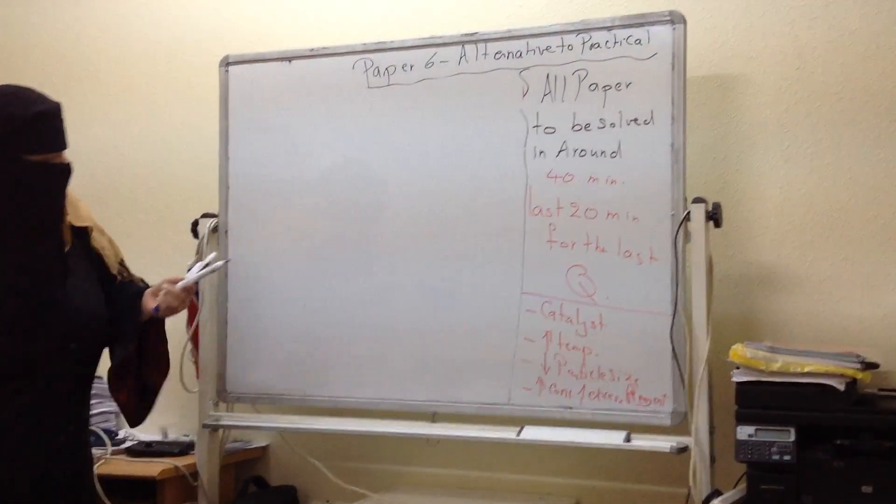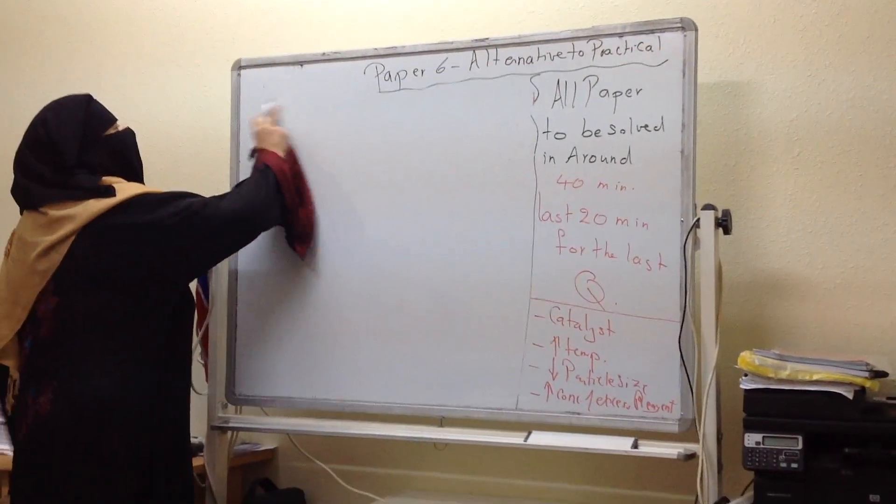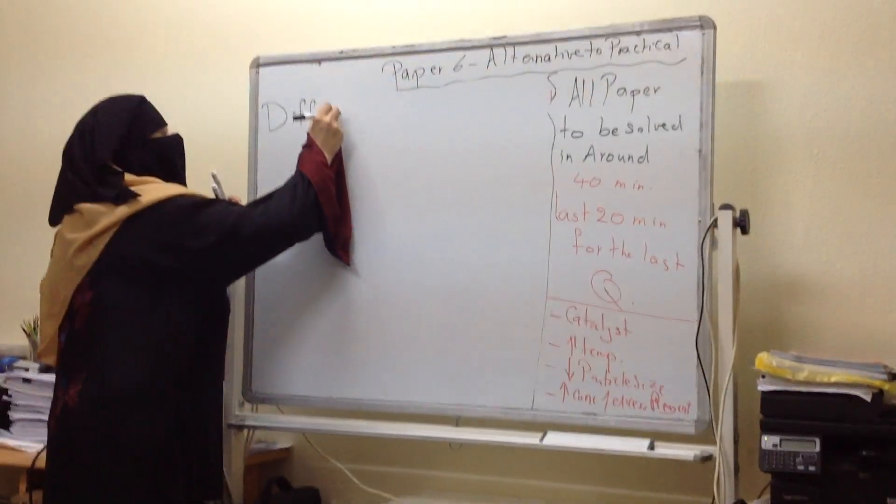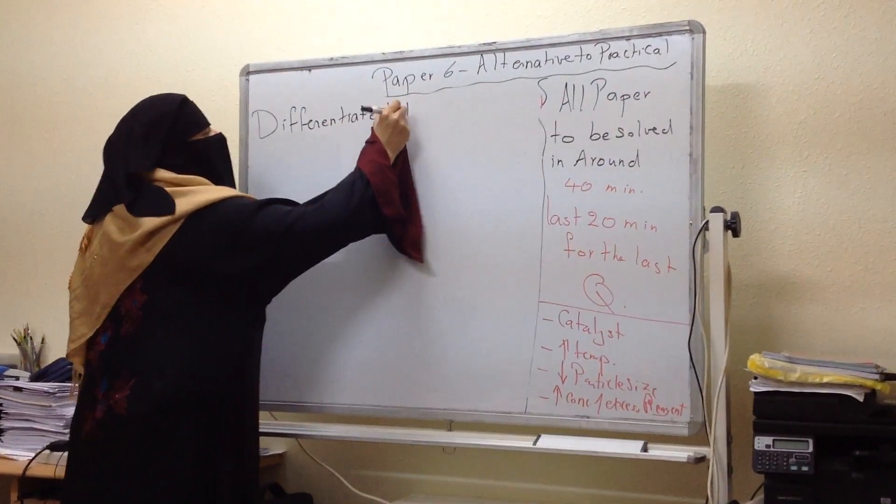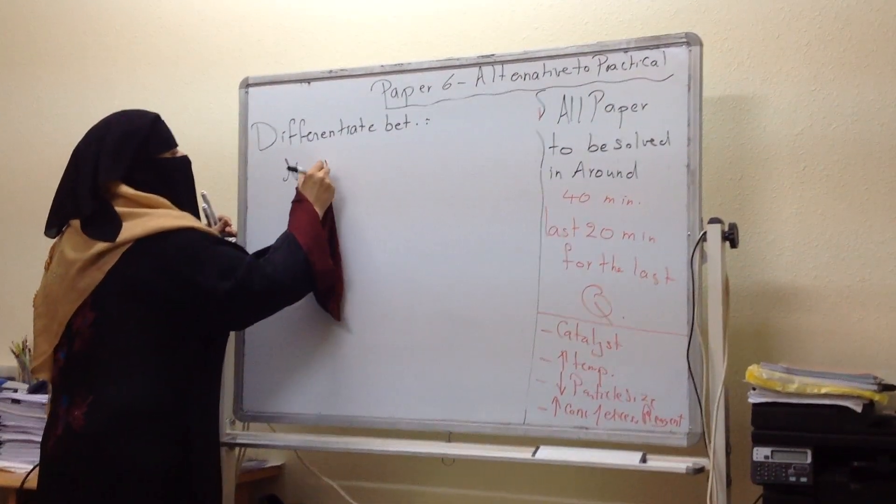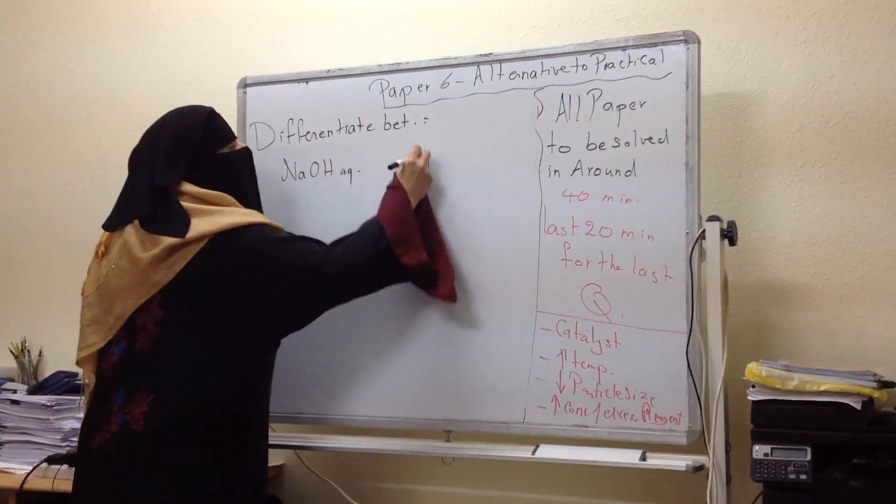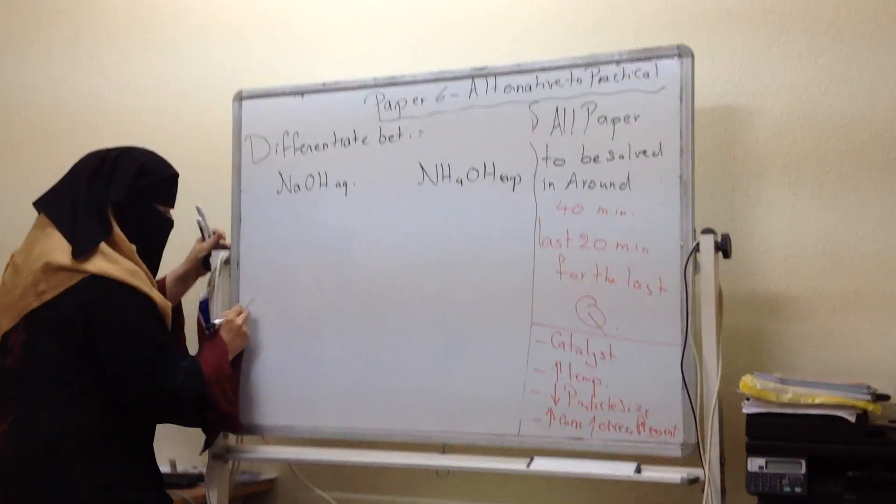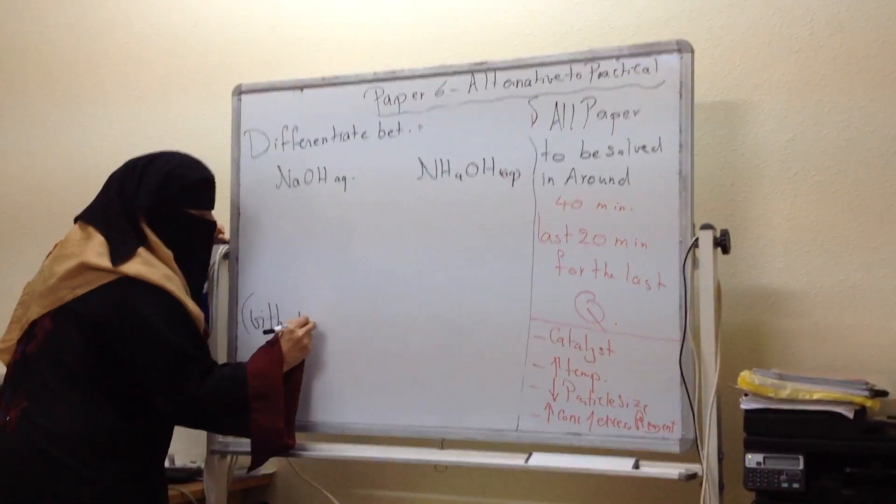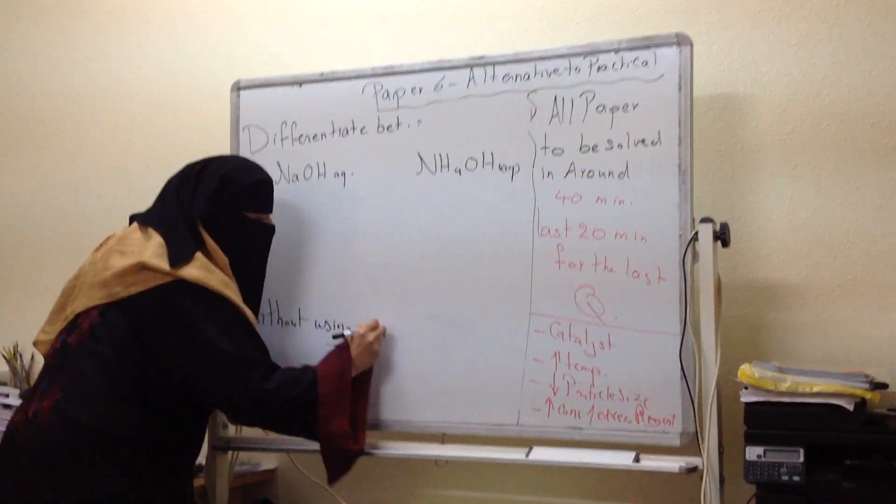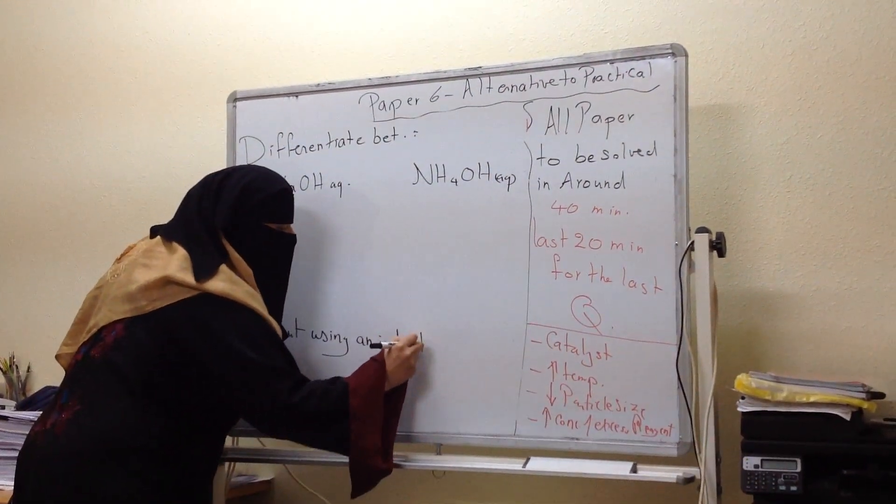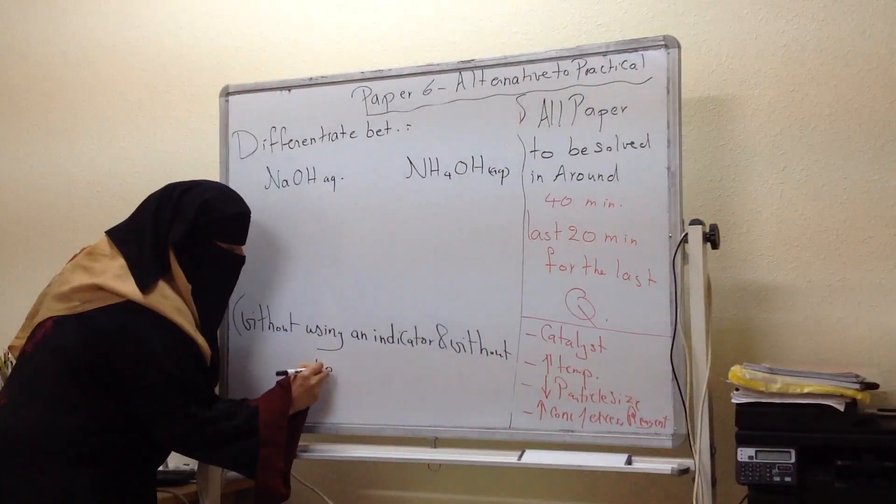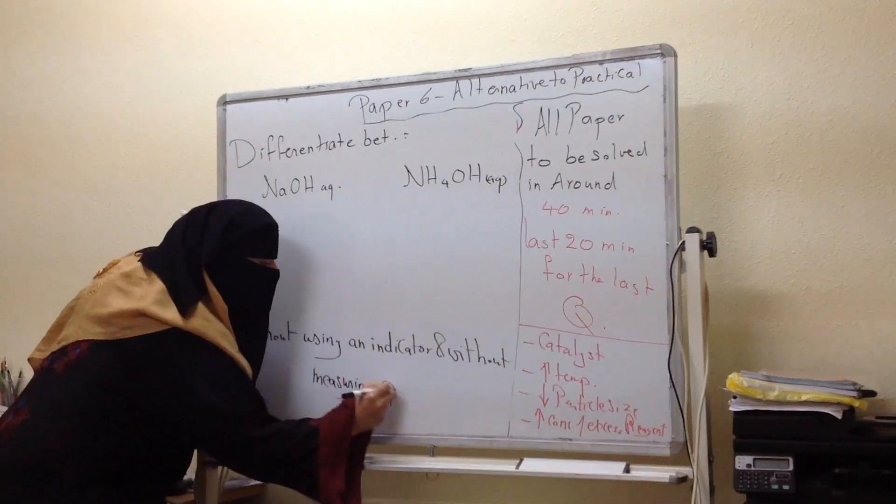The sodium hydroxide aqueous solution - how to differentiate between sodium hydroxide aqueous solution and ammonium hydroxide aqueous solution without using an indicator and without measuring pH value?